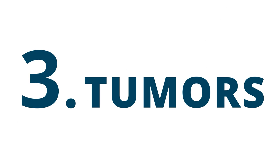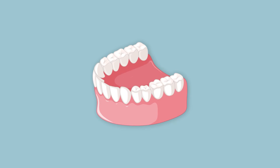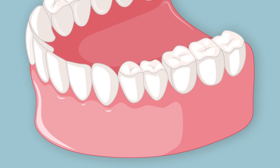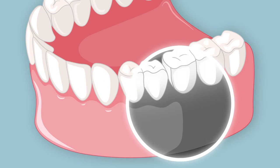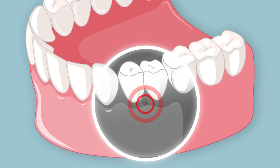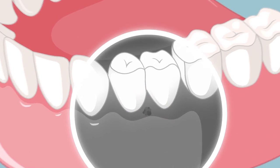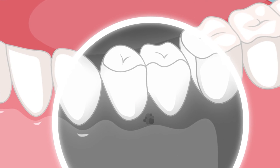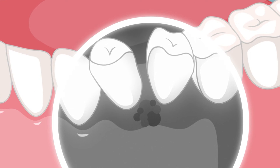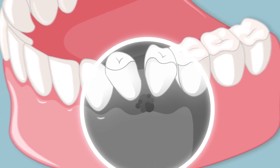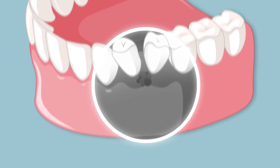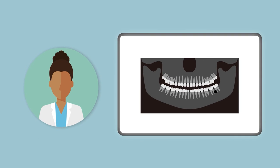3. Tumors. Tumors develop from abnormal cells around the teeth or jawbone. Most tumors are benign and do not spread to other sites in the body. However, they can grow and cause expansion of the jawbone and movement of the nearby teeth. Consistent x-rays can lead to early detection and treatment of tumors.